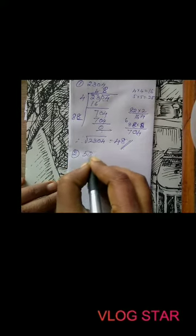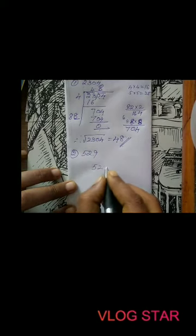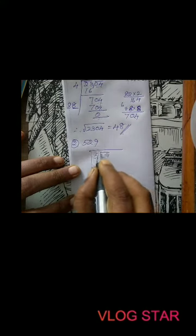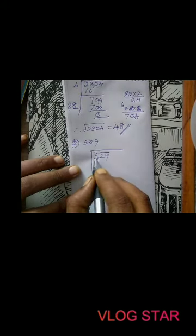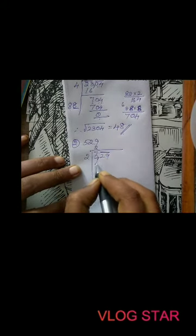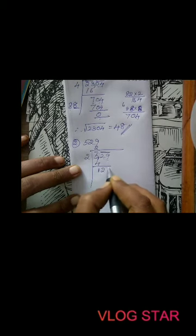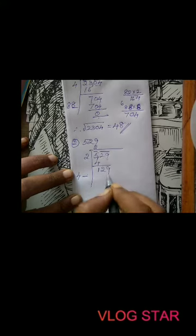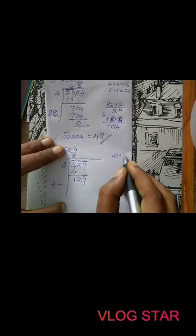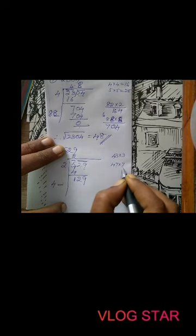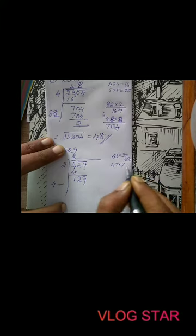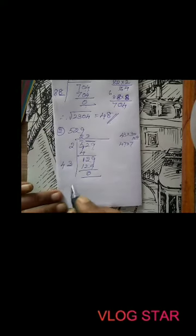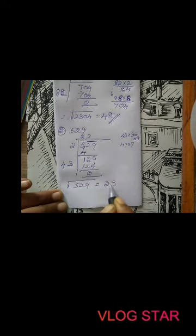Now, a 3-digit example: find the square root of 529. From units place, pair as '29' and '5'. For 5, closest square is 2×2=4. Subtract: 5−4=1, bring down 29 to get 129. Double divisor 2 to get 4; since it ends in 9, we try 3: 43×3=129. Remainder 0. Therefore, the square root of 529 is 23.